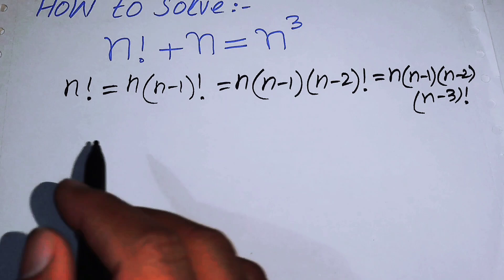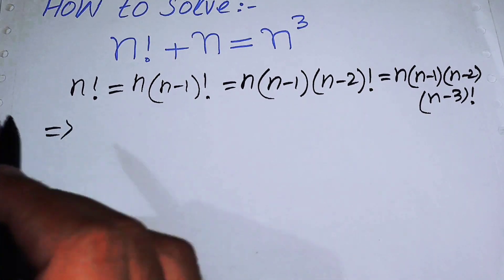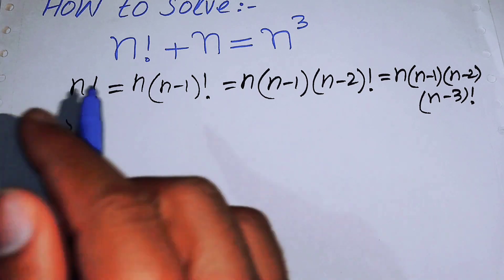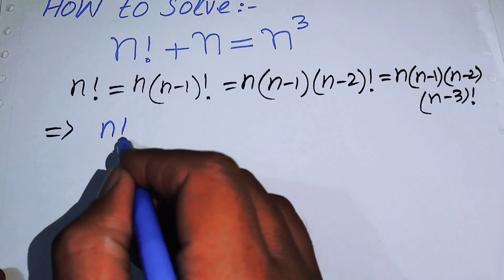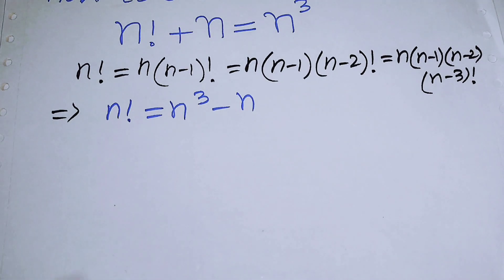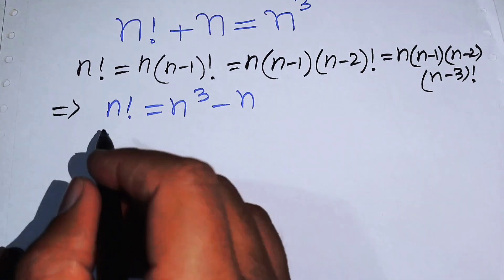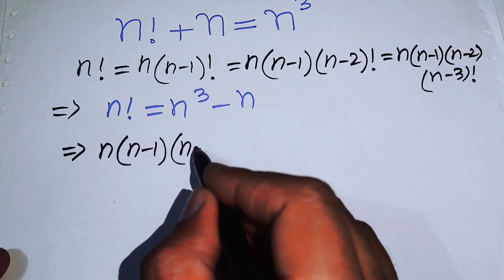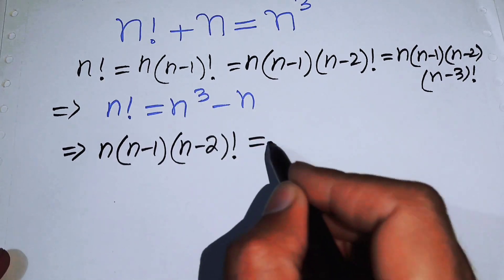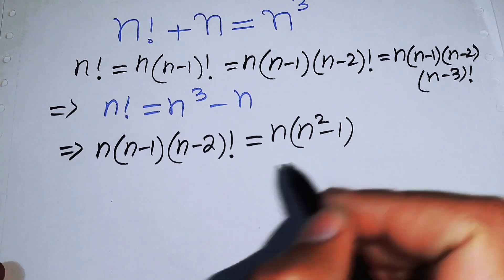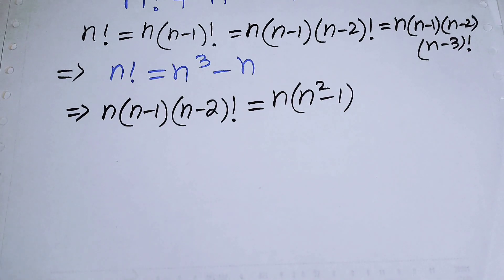Before opening the factorial, we first move plus n to the right side and get n factorial equals n cubed minus n. Now we open the recursive formula and get n times (n-1) times (n-2) factorial, and on the right side we take n common from both terms to get n times (n squared minus 1).